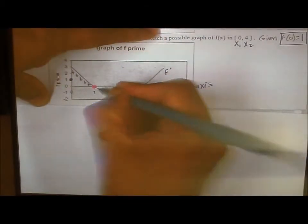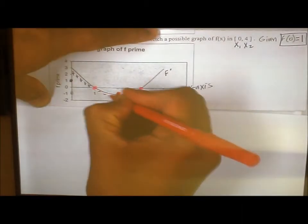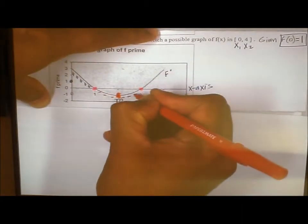If I'm below the x-axis, f prime is what? f prime is negative.